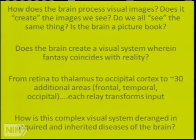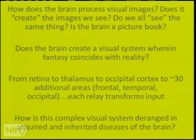Is the brain a picture book? Or, as somebody wrote, the brain can create a visual system where fantasy — the input of the central nervous system — coincides with reality, meaning we aren't all seeing the same things. The pathway goes from the retina to the thalamus to the occipital cortex and then to many different areas of the brain, particularly in the frontal, temporal, and occipital lobes. Each relay transforms the images. This complex system is deranged in both acquired and inheritable diseases.